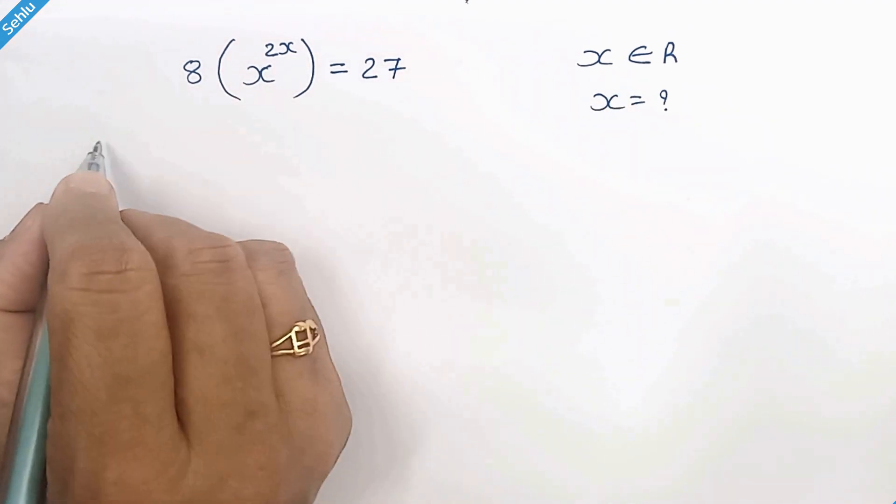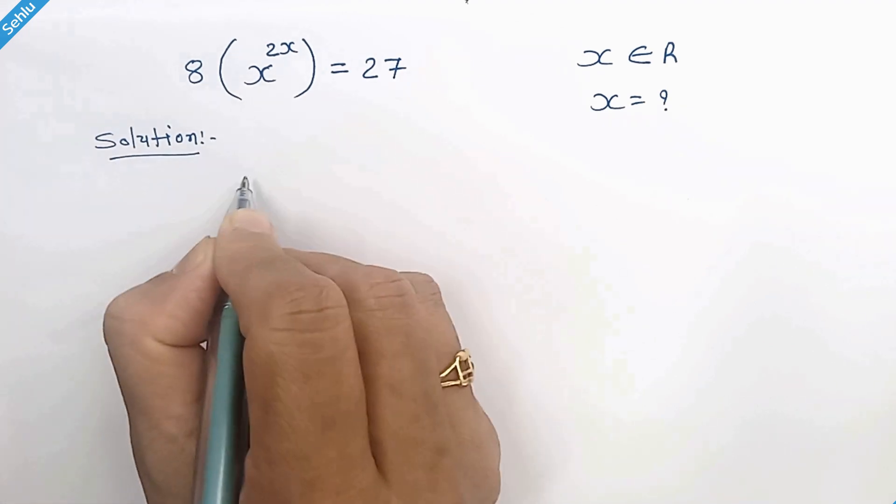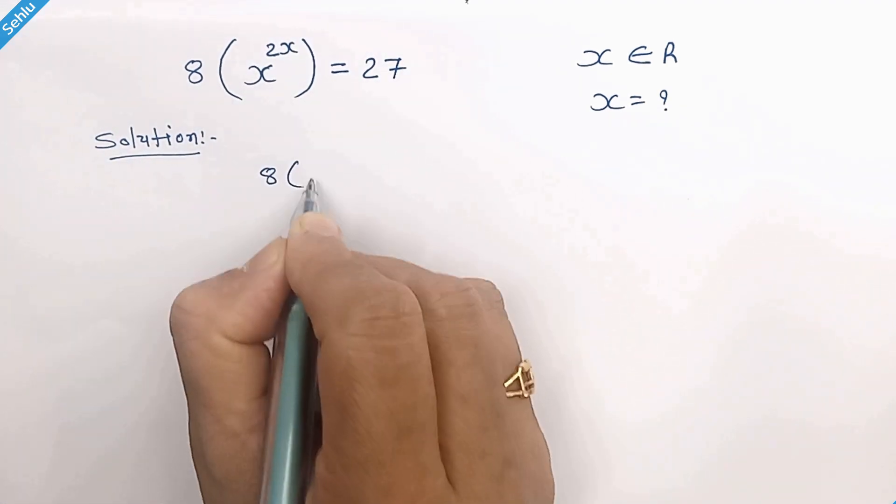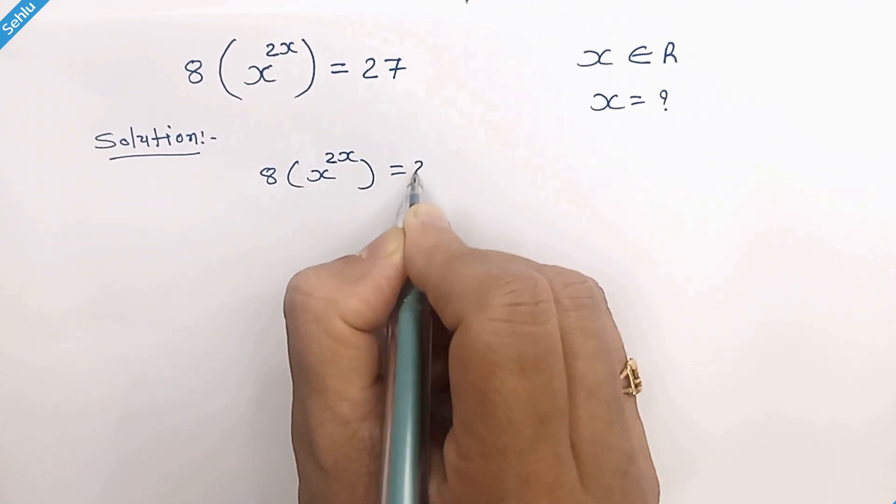Hello friends, let's find the real value of x. So our question is 8 times x to the power 2x is equal to 27.